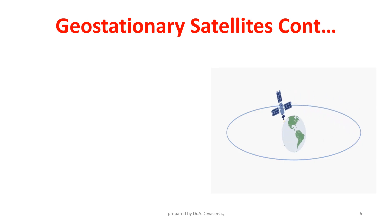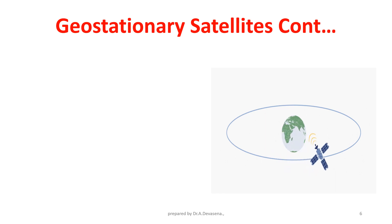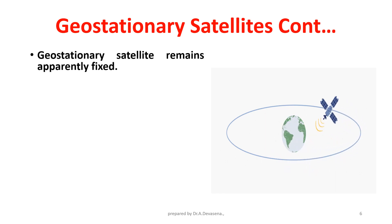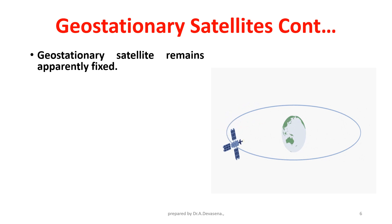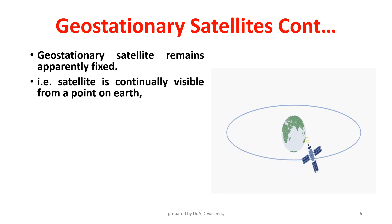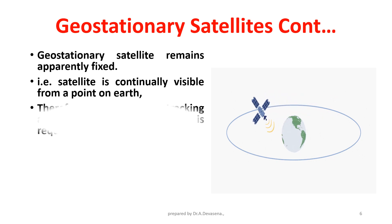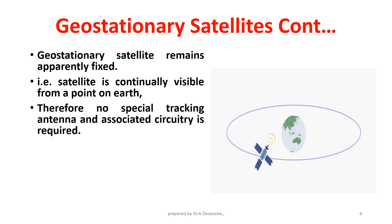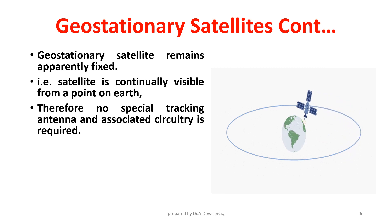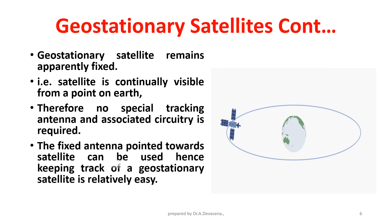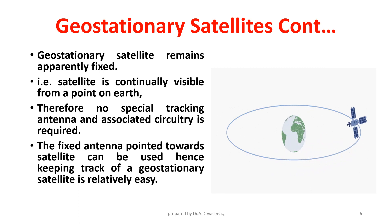Geostationary satellite remains apparently fixed — that is, the satellite is continuously visible from a point on Earth. Therefore, no special tracking antenna and associated circuitry is required. The fixed antenna pointed towards the satellite can be used. Hence, keeping track of a geostationary satellite is relatively easy.